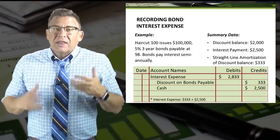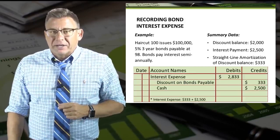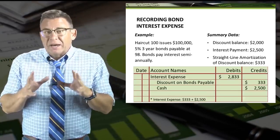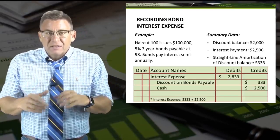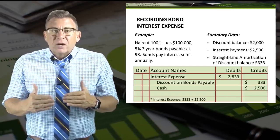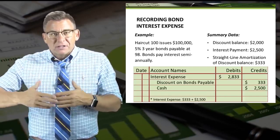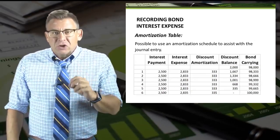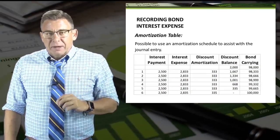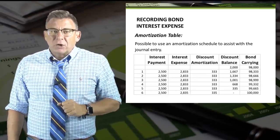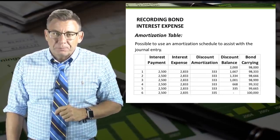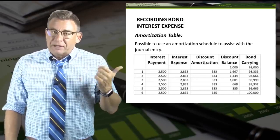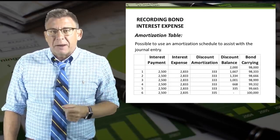Does amortization affect cash flow? Amortization expense refers to depletion of intangible assets and can be measured as an expenditure on the balance sheet of a company. Amortization is always a non-cash expense. Therefore, like all non-cash expenses, it must be added back to net earnings when preparing the indirect statement of cash flow.